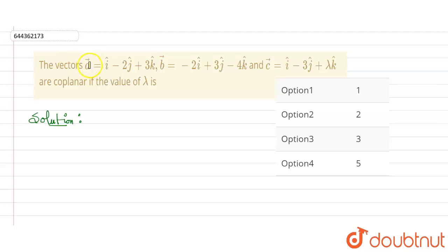Hello everyone. In this question, vector a is i cap minus 2j cap plus 3k cap, vector b is minus 2i cap plus 3j cap minus 4k cap, and vector c is i cap minus 3j cap plus lambda k cap are coplanar. If the value of lambda is—it is given that three vectors are coplanar.